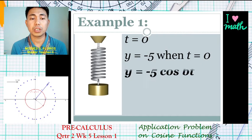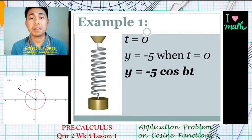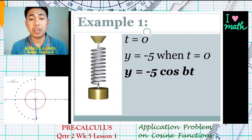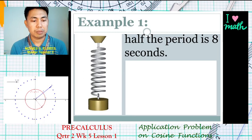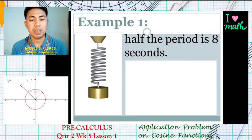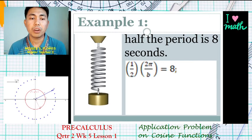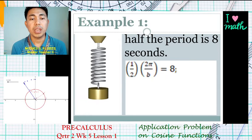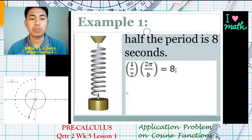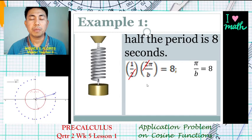Our working equation using the cosine function is y equals negative five cosine bt, where b refers to a variable related to the period and t is our time. From the given, it took the weight eight seconds from the lowest point to its highest point — so eight seconds upward, eight seconds downward. Therefore, half of the period is eight seconds. Using the formula for period, two pi over b, we take half of it and equate it to eight. So pi over b equals eight.